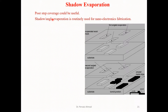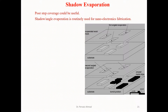Poor step coverage can actually be useful. Shadow-angle evaporation is routinely used for nano-electronic fabrications. While one technique may have deficiencies, those same characteristics can be an advantage for another application. Shadow-angle evaporation is very routinely utilized for nano-electronic fabrications.